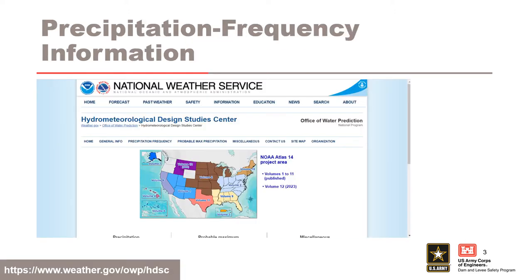Regional precipitation frequency pulls data from many gauges in a region to gain the effect of a larger sample size, which is an example of trading space for time. Precipitation gauge sites get a random sample of the overall meteorology in a given area, and these observations are used to complete statistical analyses to estimate depth duration frequency curves with uncertainty.